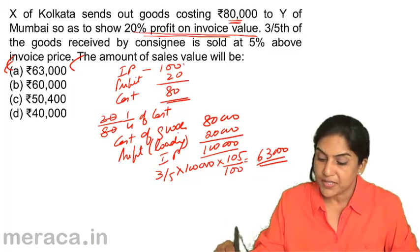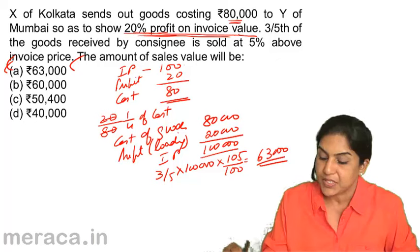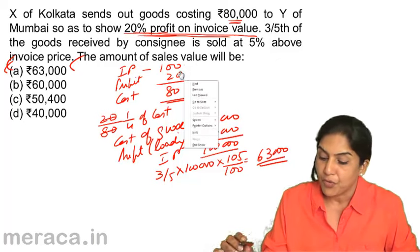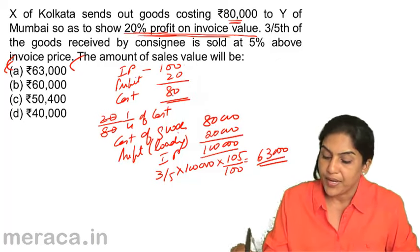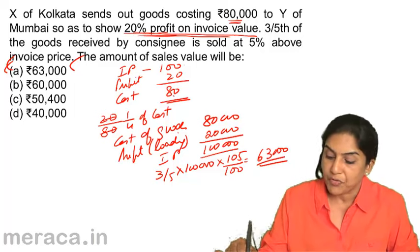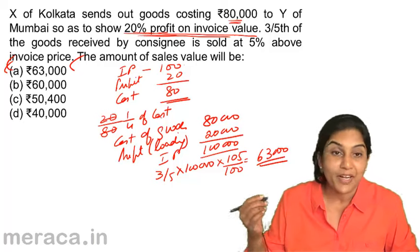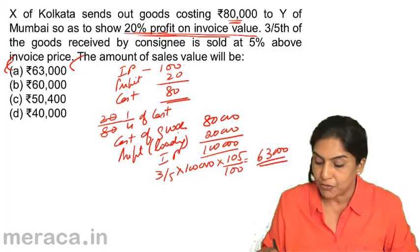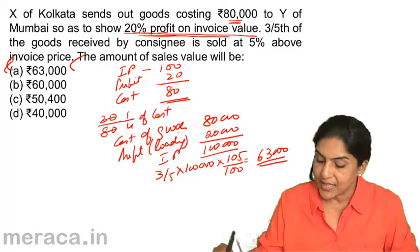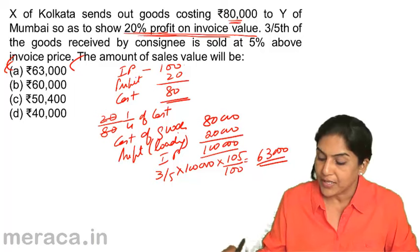Invoice price is 100; profit is 20, because profit is 20% of invoice value. Therefore, 100 minus 20 = 80 must be the cost. The relation of profit to cost is 20/80, or one-fourth of cost, i.e., 25% of cost. Cost of goods is 80,000; therefore the loading is one-fourth of 80,000, that is 20,000.